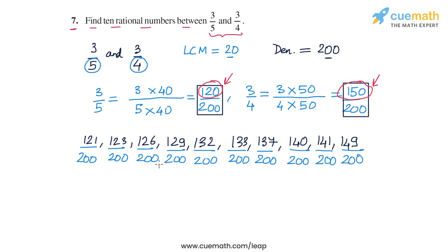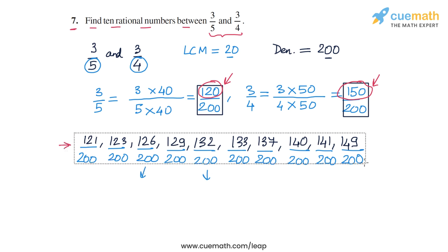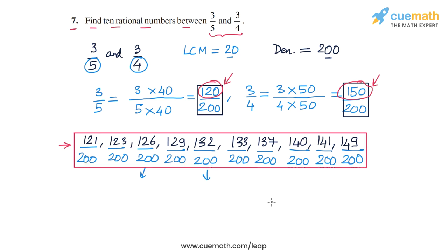Some of these, like 126/200 or 132/200, could be reduced to lower forms, but that's not required — we are not asked to write the 10 numbers in lowest form. So these 10 numbers are our answer: 10 rational numbers between 3/5 and 3/4.